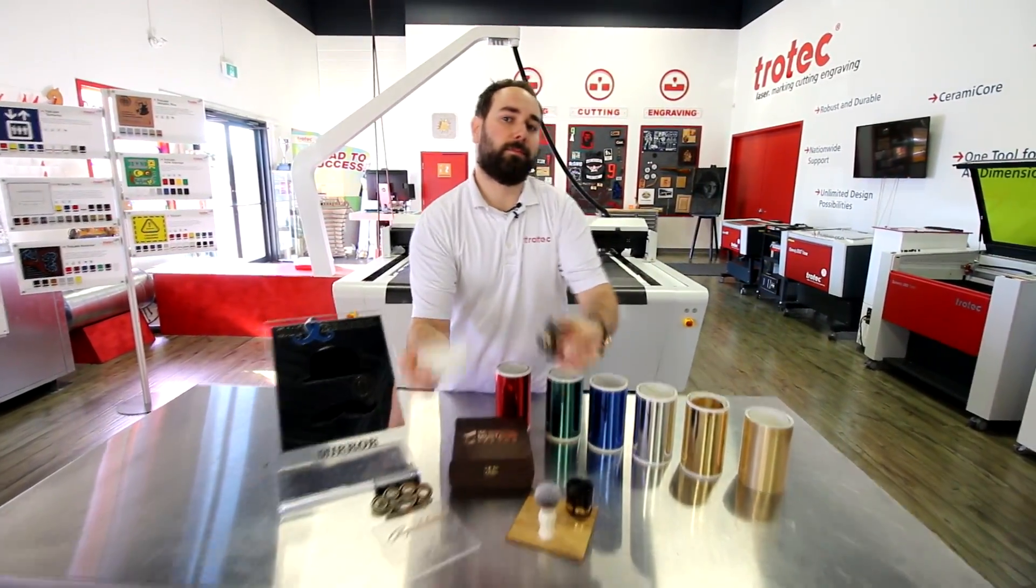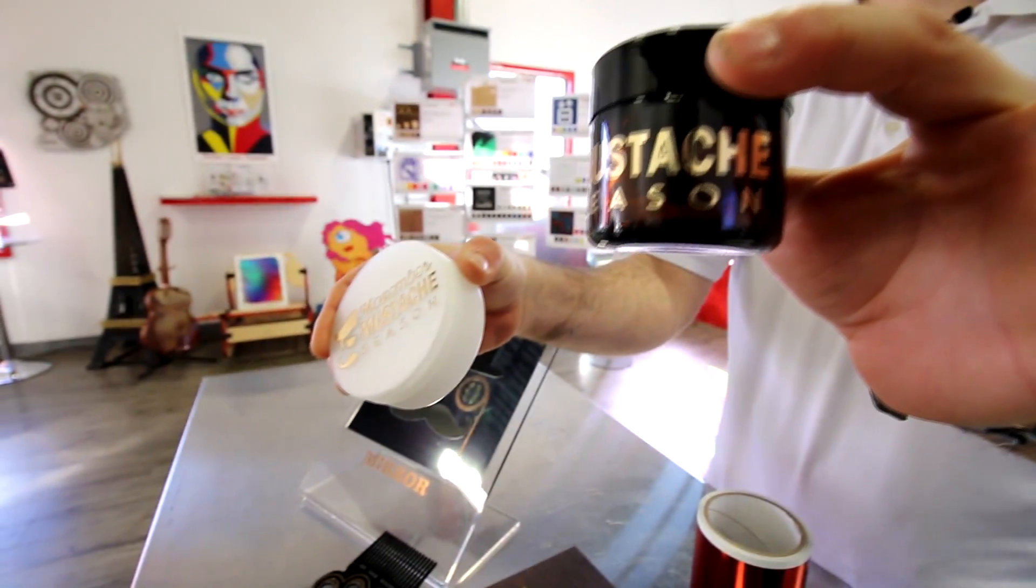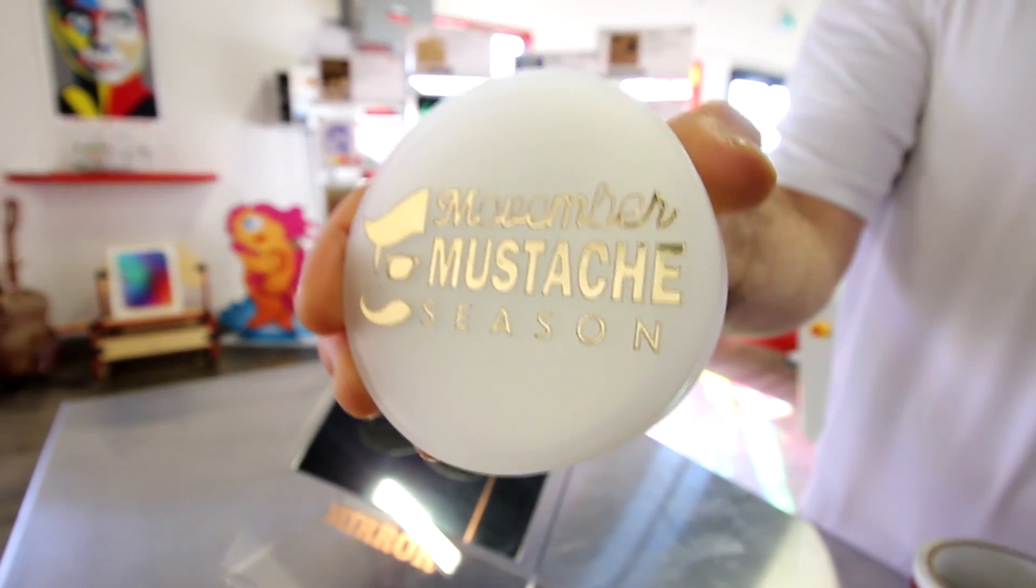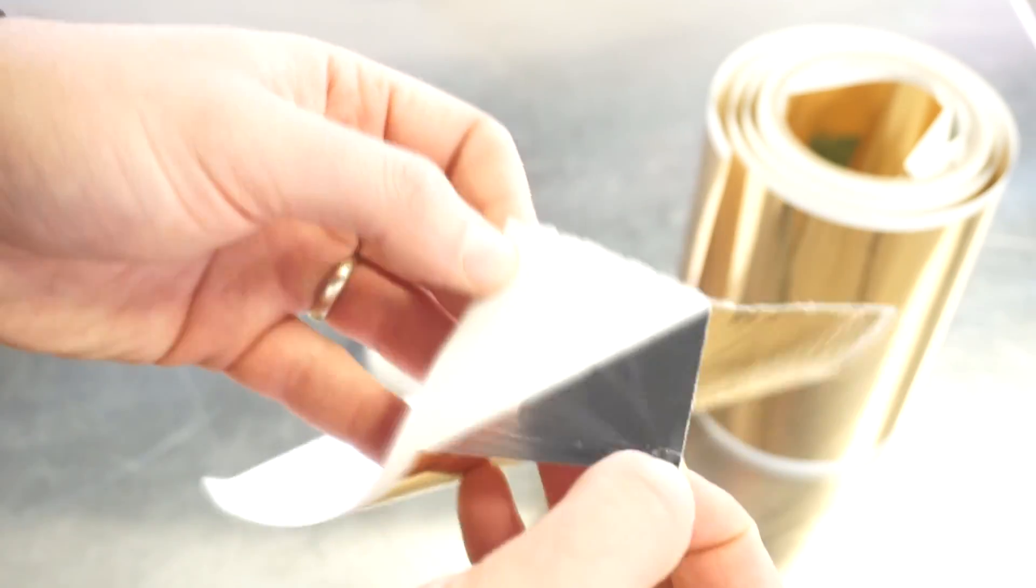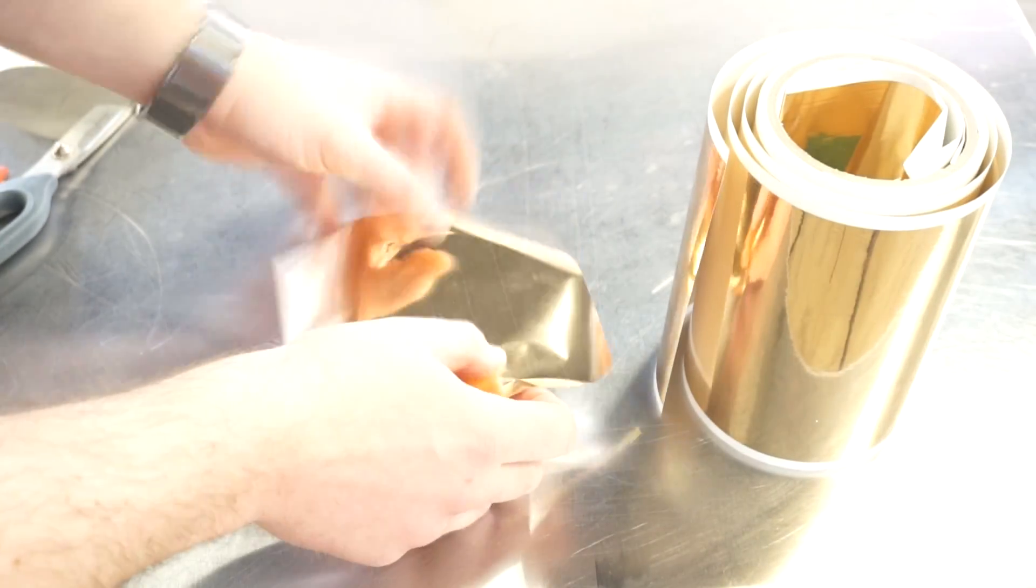Next, we did our pomade jars. We got our jars from Amazon, and we used the same kiss cut method.